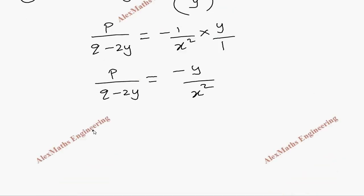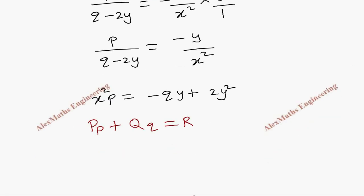Cross multiplying, we get x²p = -qy + 2y². We have to rearrange in the form of Pp + Qq = R.